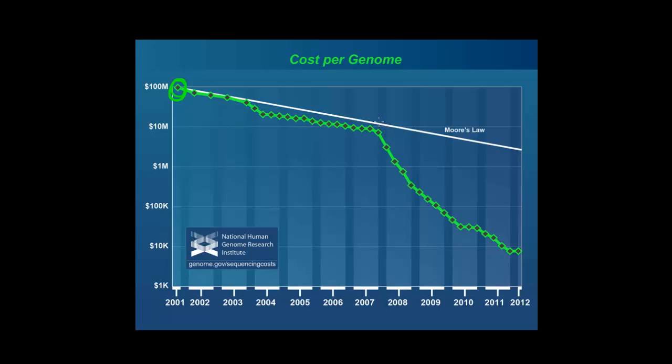And then we get out here to 2008 and we're at $10 million. And now, in 2013, it costs less than $10,000 to sequence a genome. That's still a lot of money for one person maybe, but it's much cheaper than $100 million. And that's catalyzing a lot of new research into genomics.